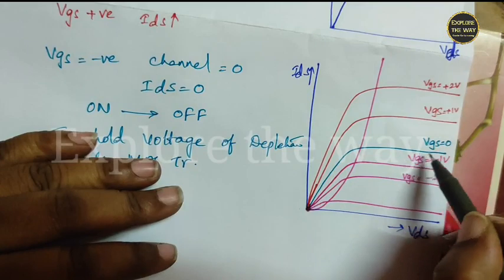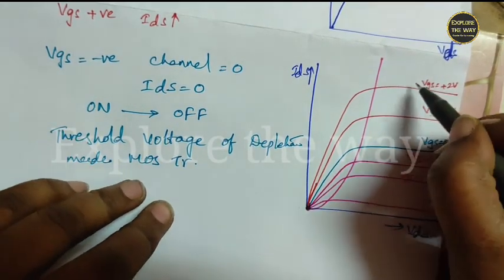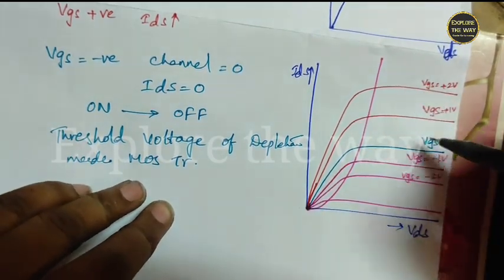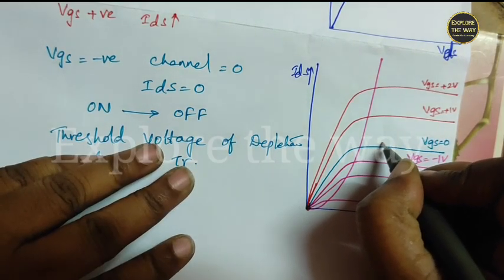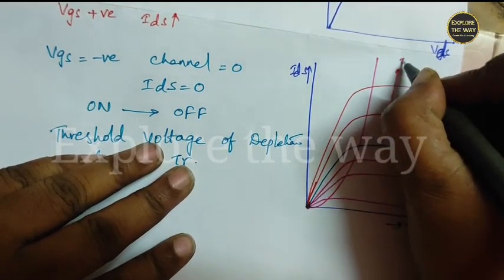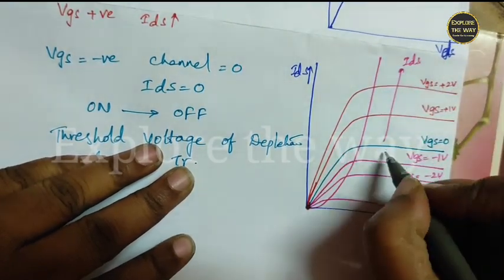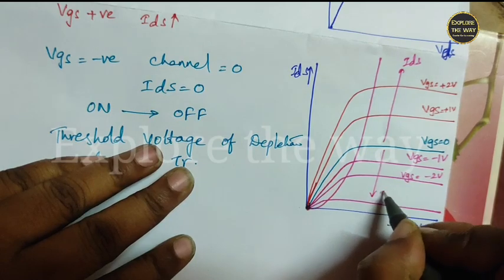This is the case when VGS is equal to 0. And, here, in this case, VGS increases. From this point, IDS increases. And, from this point, IDS reduces.